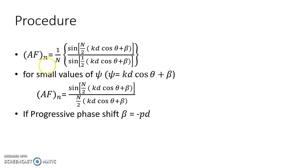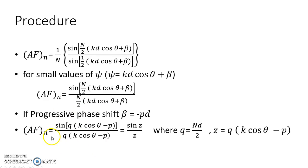To maximize the progressive phase shift, we consider beta equal to minus kd·cosθ. At θ = 0 degrees, we treat k·cosθ as p, where p is the optimization parameter. We substitute q = nd/2 and z = q(k·cosθ − p) to simplify the array factor equation. This yields the final form of the array factor after these substitutions.